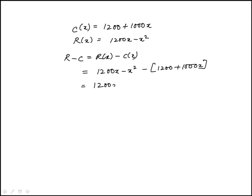And we combine the like terms after distributing this negative sign, and those are the x terms, so that's 200x minus x squared minus 1,200.